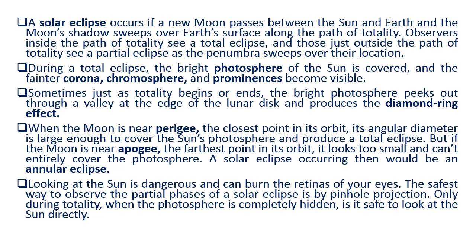When the moon is near the closest point in its orbit, its angular diameter is large enough to cover the sun's photosphere and produce a total eclipse. But if the moon is near apogee — the farthest point in its orbit — it looks too small and cannot entirely cover the photosphere. A solar eclipse occurring then would be an annular eclipse.